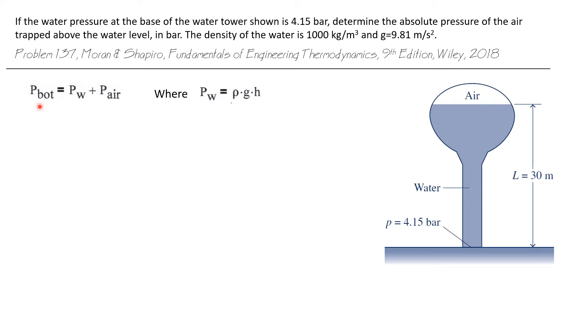So we can write an expression for the pressure at the bottom. It's simply the pressure of the water, the pressure created by the column of water above the bottom, plus the pressure of the air which is sitting above the surface of the water.